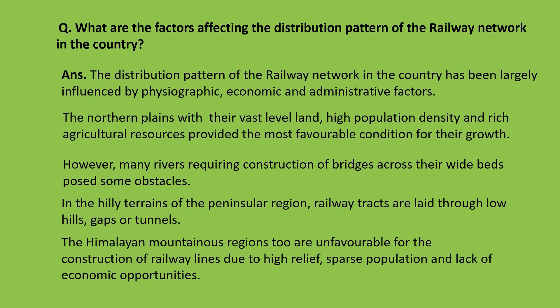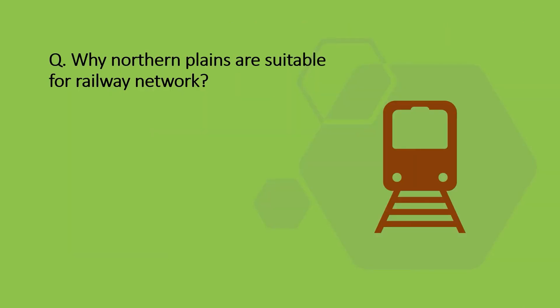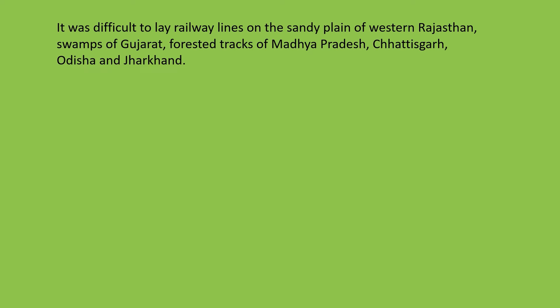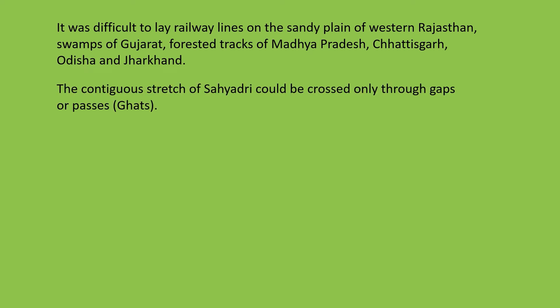Why are the northern plains suitable for the railway network? The northern plains with vast level land, high population density, and rich agricultural resources provided the most favorable conditions for their growth — these are the exact lines you should write. It was difficult to lay railway tracks in the sandy plains of Rajasthan, swamps of Gujarat, water-clogged areas, forested tracts of Madhya Pradesh, Chhattisgarh, Odisha, and Jharkhand. The contiguous stretch of the Sahyadri mountains could be crossed only through gaps and passes.